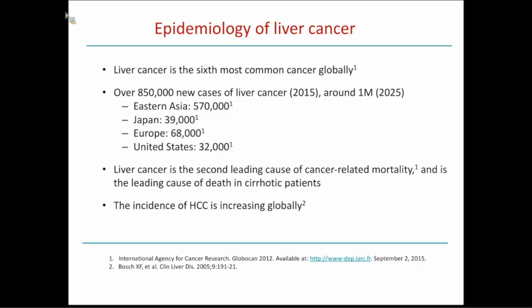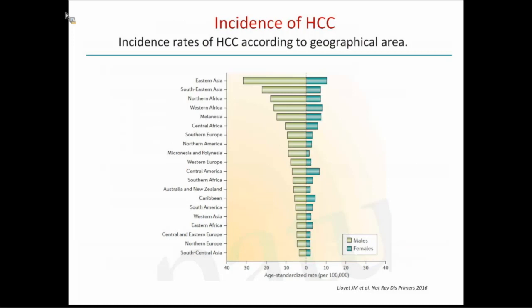Years ago the median age in Japan was 65, and now is around 76 years old, the median age of patients with HCC. We have Europe with a steady state — no increase or decrease — around 70,000. And in the U.S. it is increasing. It is the second leading cause of cancer-related mortality, and in cirrhotic patients is the leading cause of death. In North America, 15 years ago we had an incidence of three to five cases per 100,000 inhabitants in males, and now we are around 10 cases per 100,000 inhabitants, which is more or less the incidence in southern Europe.